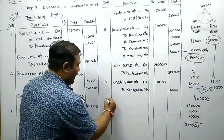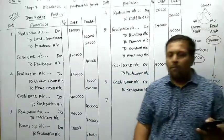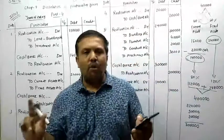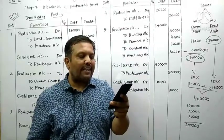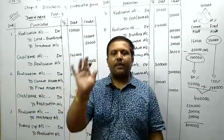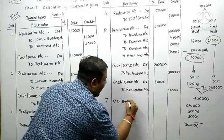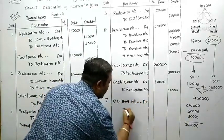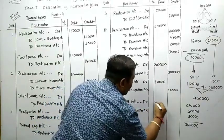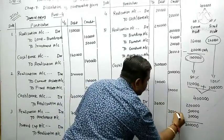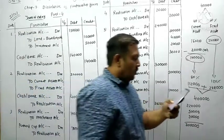Transaction 7: There is no value of goodwill in the books of the firm. So the first book value entry is not required. But at the time of dissolution, 35,000 is realized for goodwill. Cash and Bank Account debited to Realization Account 35,000.